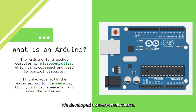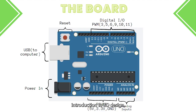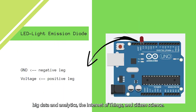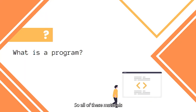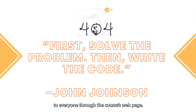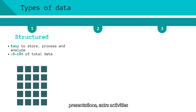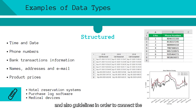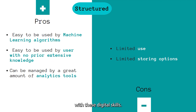We developed a seven-week course. The themes were robotics and automation, introduction to 3D design, introduction to programming, app development, big data and analytics, Internet of Things and citizen science. All these materials are available to everyone through the course's web page, where teachers can also find presentations, extra activities and guidelines in order to connect the social and emotional learning part of the course with these digital skills.